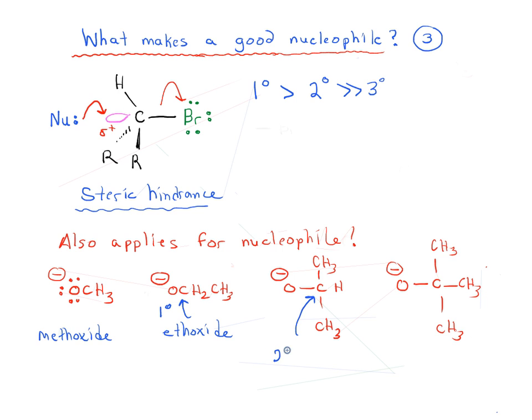And here is the conjugate base of 2-propanol, so this is otherwise known as isopropanol, or in this case, since it's a conjugate base, it's isopropoxide. And it is secondary, so this carbon is attached to two carbons.